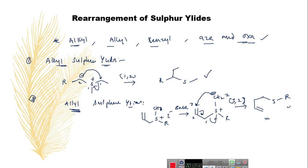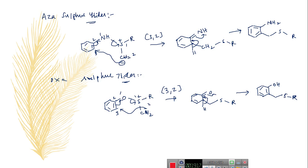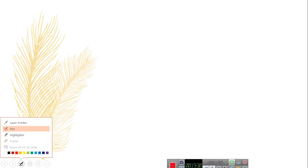There are different kinds of ylides we have discussed: alkyl sulfur ylides undergo 1,2 sigmatropic rearrangement; allyl sulfur ylides undergo 3,2 sigmatropic rearrangement; benzyl sulfur ylides, depending on the temperature, can undergo 3,2 — that is Sommelet-Hauser type — or Stevens rearrangement; aza sulfur ylides undergo 3,2 sigmatropic rearrangement; and finally oxa sulfur ylides also undergo 3,2 sigmatropic rearrangement. Let us discuss another example for this rearrangement reaction.